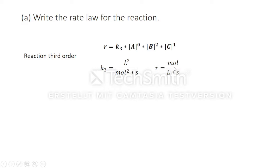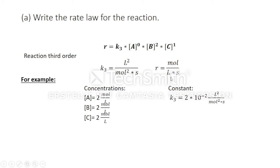In the following example are concentrations A, B and C all equal to two mole per liters. These numbers do not have to be the same. They are chosen for the purpose of explanation only. The constant was chosen to be two times ten to the power of minus two.